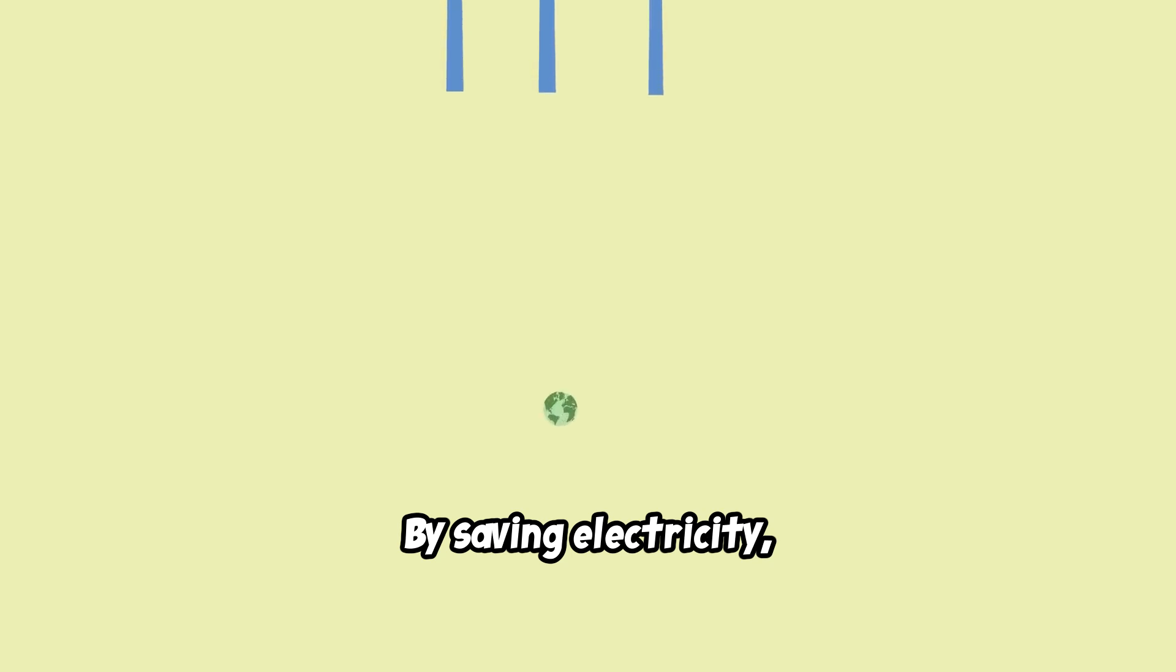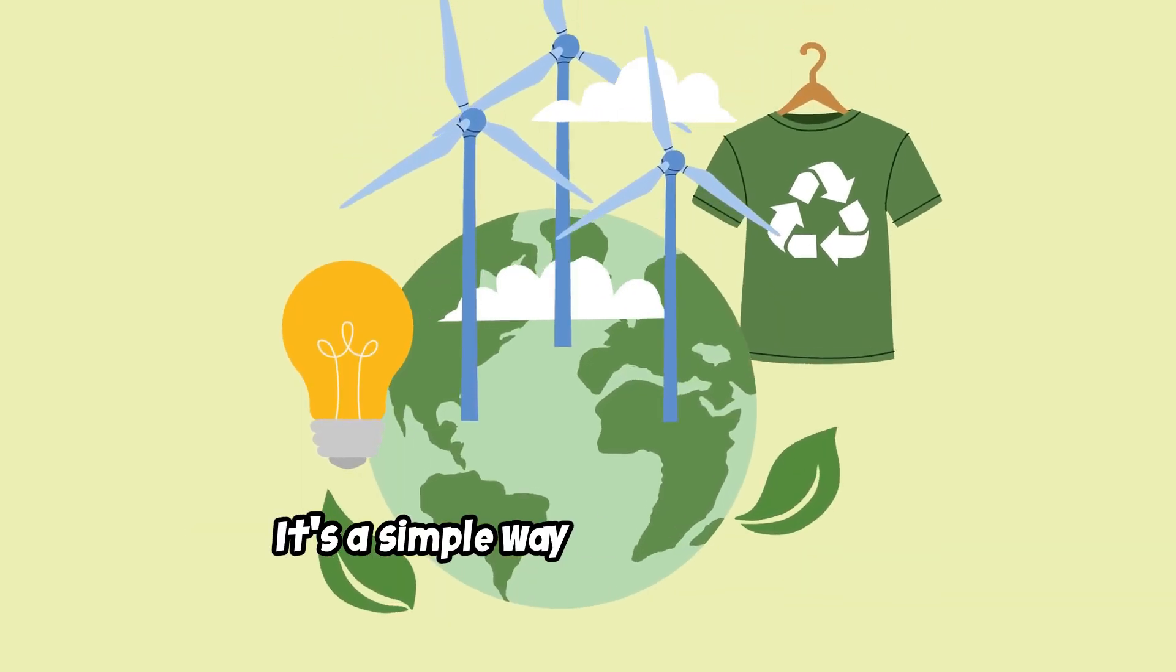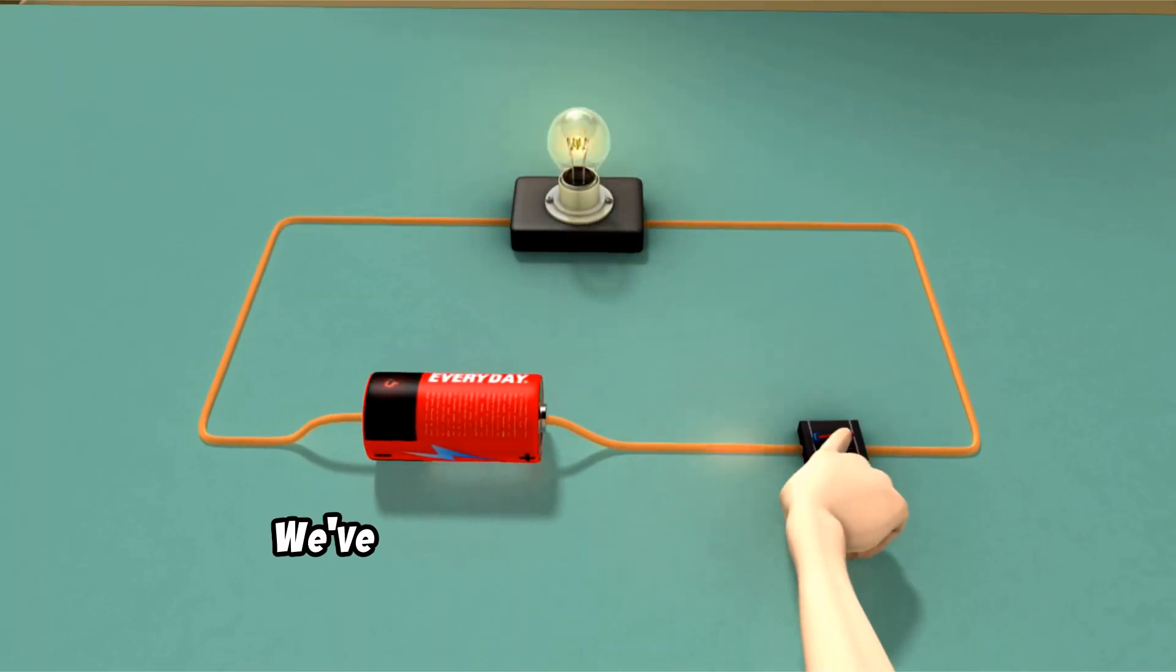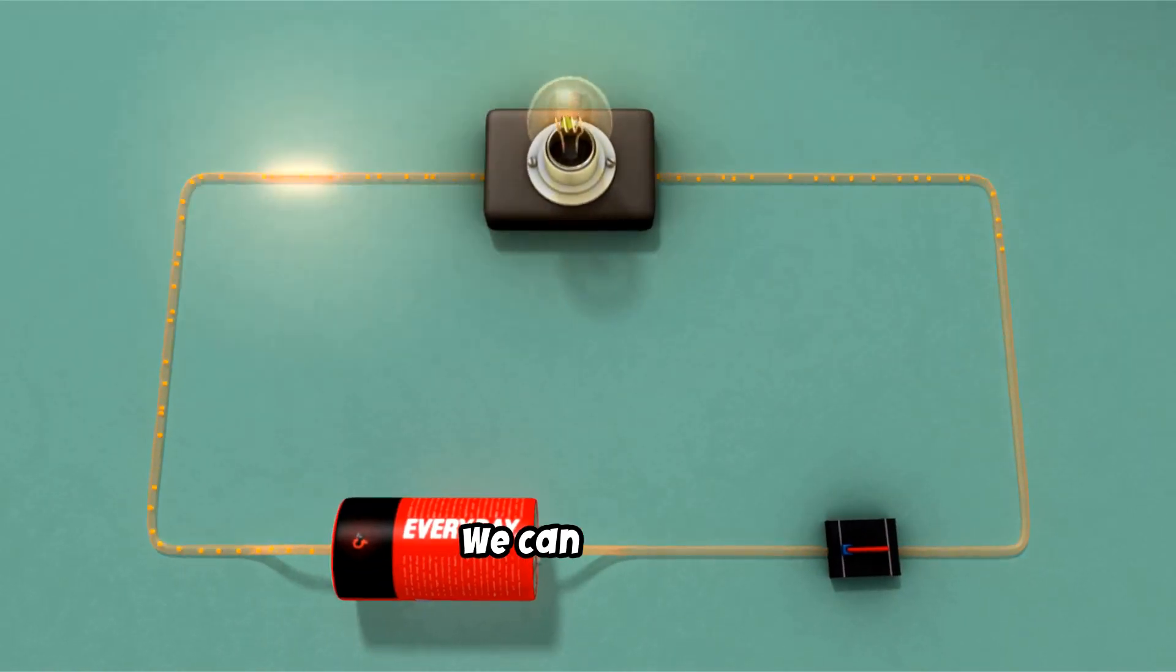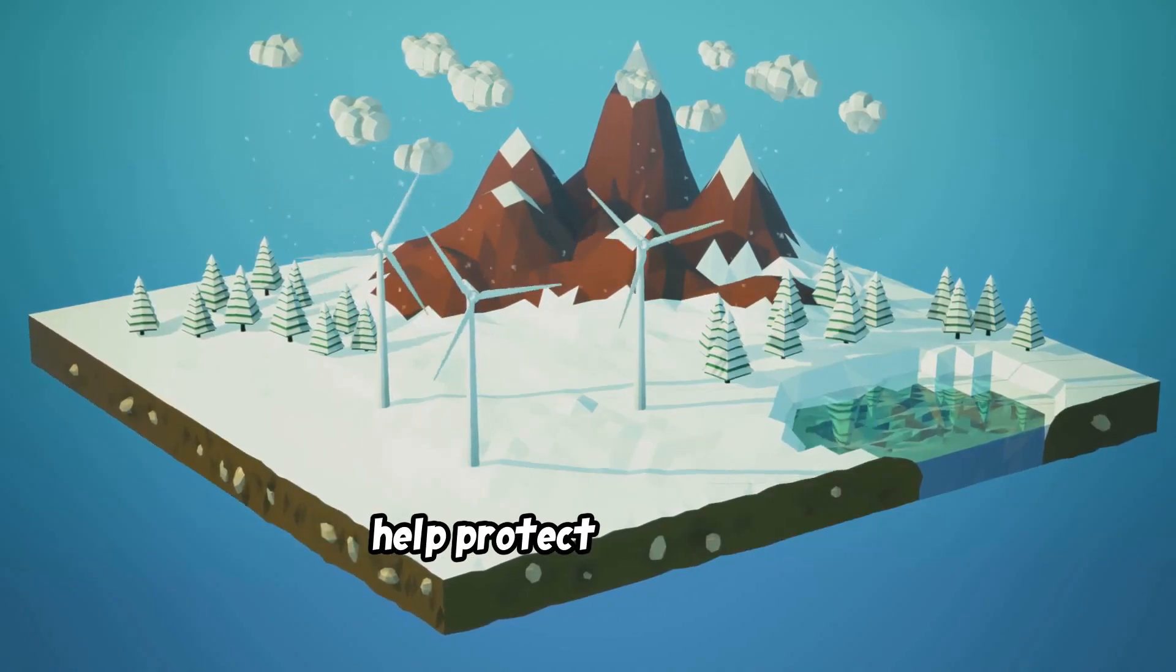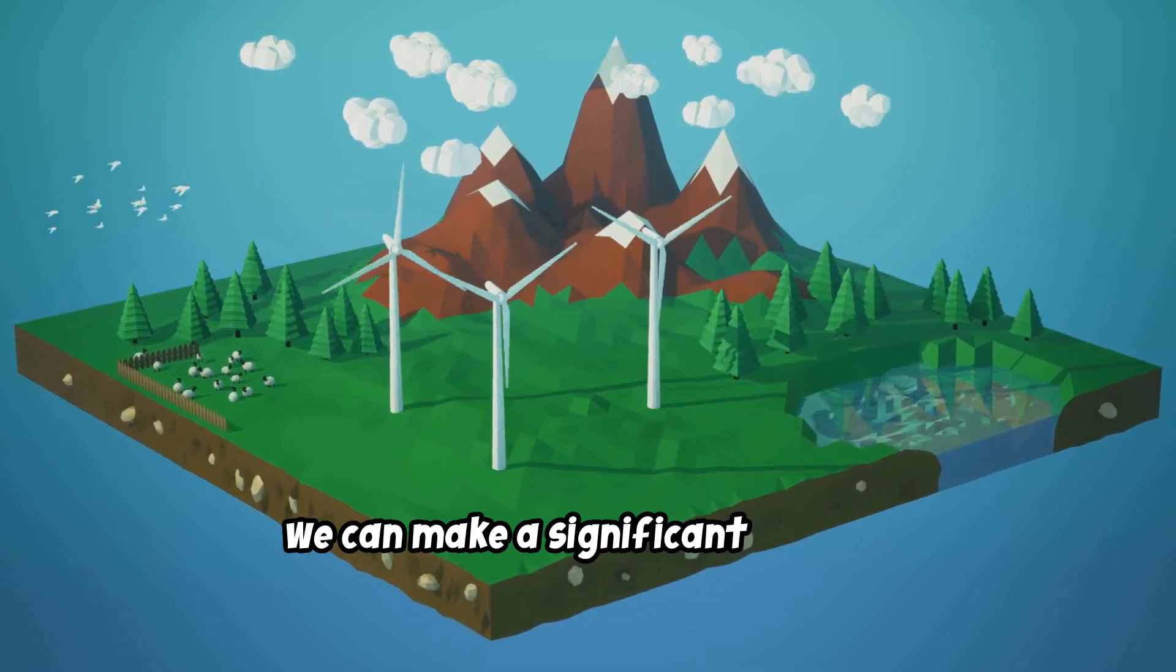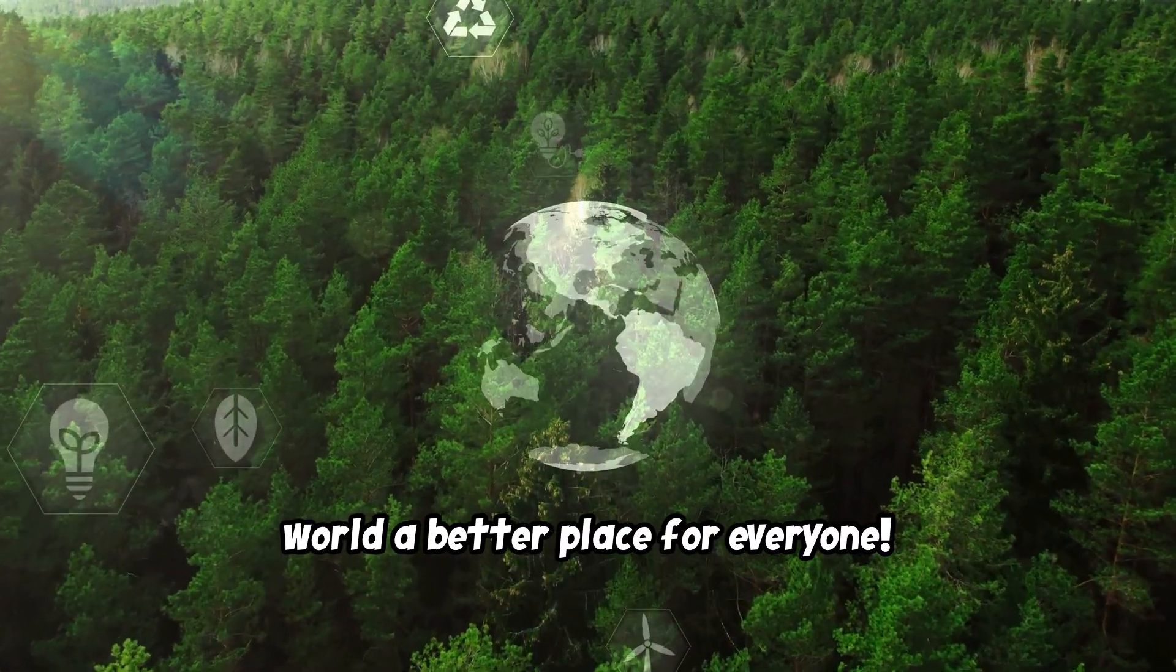By saving electricity, we can make a big difference for our planet. It's a simple way to contribute to a healthier environment. So there you have it. We've learned all about electricity, from how it travels to our homes to how we can save it. Remember to use electricity wisely and help protect our planet. Every action counts. And together, we can make a significant impact. Let's all be super savers and make our world a better place for everyone.